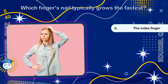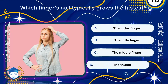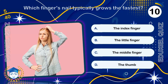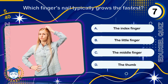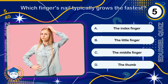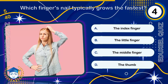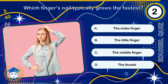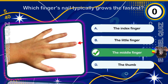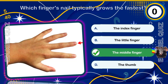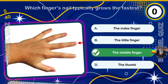Which finger's nail typically grows the fastest? The middle finger. Nail growth is related to the length of the digit and the frequency of minor trauma and use. The middle finger's nail typically sees the highest growth rate.